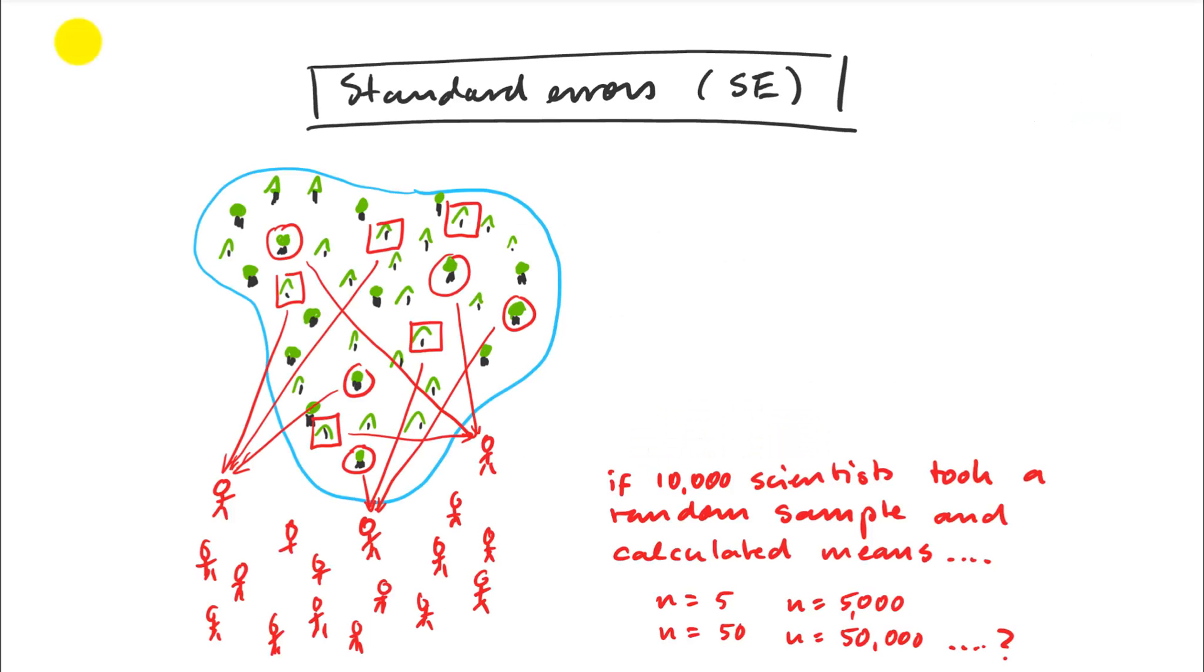So we're going back to the example of repeated sampling that we had before. So we have our ecoregion with different types of trees, and we want to know what the means of certain attributes of those trees are, maybe wood quality, maybe growth rates.